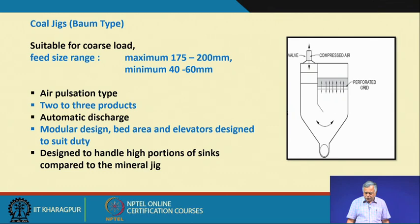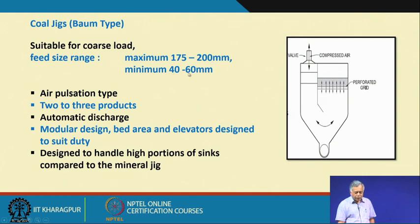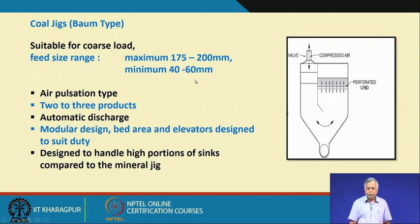This is a very popular design for coal processing, known as the Baum jig. It is suitable for coarse feed: size range up to a maximum of 175 to 200 millimeters, minimum 40 to 60 millimeters. If the feed is finer than 40 millimeters, your jig aperture — around 30 millimeters — means particles smaller than 30 mm will pass through.